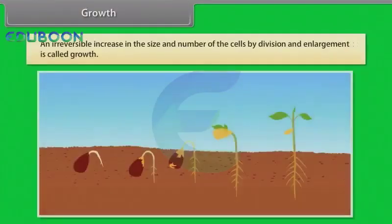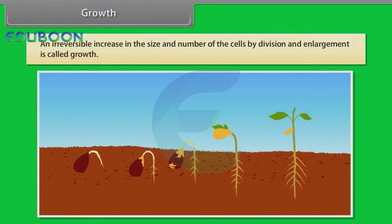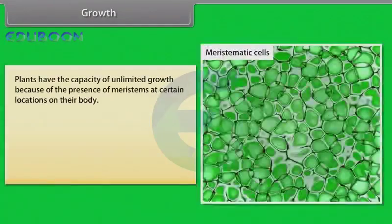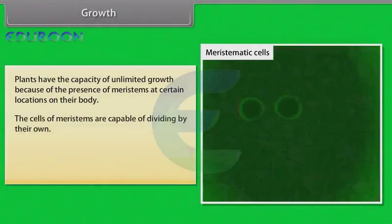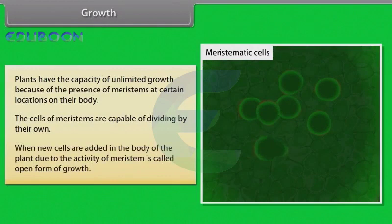An irreversible increase in the size and number of cells by division and enlargement is called growth. In plants, the growth generally is indeterminate. Plants have the capacity of unlimited growth because of the presence of meristems at certain locations on their body. When new cells are added in the body of the plant due to the activity of meristem, it is called open form of growth.